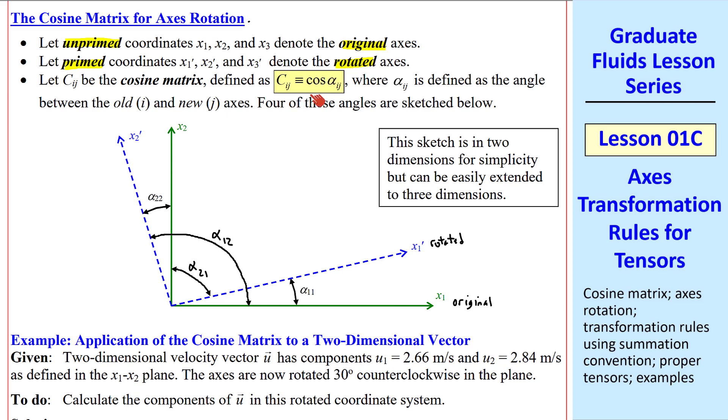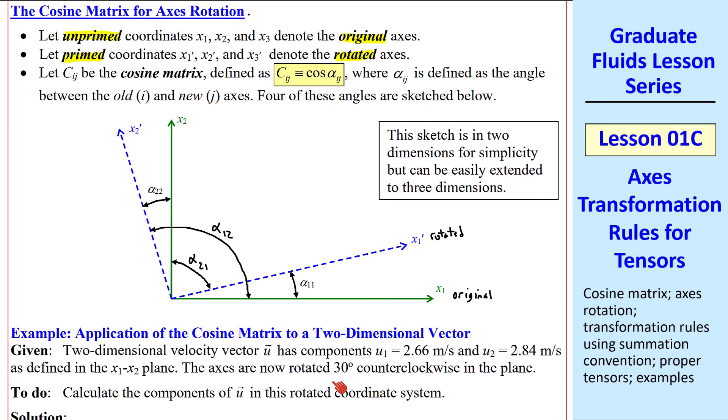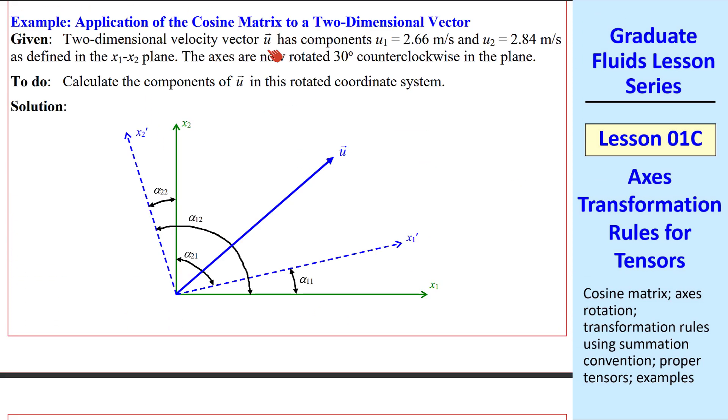Let's do an example of how we apply this cosine matrix to a vector. Suppose we have velocity vector u with these two components in the x1, x2 plane. Now we rotate the axes by 30 degrees counterclockwise in the x1, x2 plane, as shown here. Let's calculate the components of u in this rotated coordinate system. Here's our vector u. You can see from these components that it's tilted up a little bit more than 45 degrees.